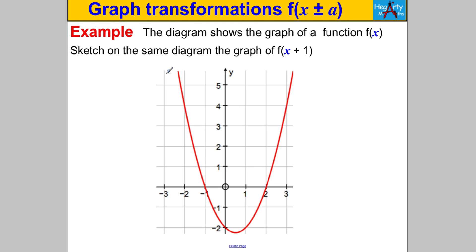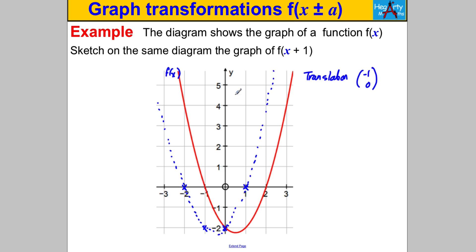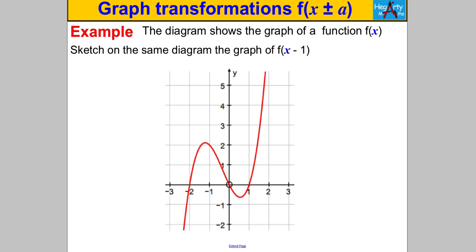Pause the video and have a go. We're given the function f(x) in the diagram and asked to draw f(x+1). We should know straight away that's a translation in the x direction by (-1, 0) — it moves the graph left by one unit. Each key point moves one unit to the left. We then join the dots to get a rough outline of the graph of f(x+1), shifted one unit to the left.